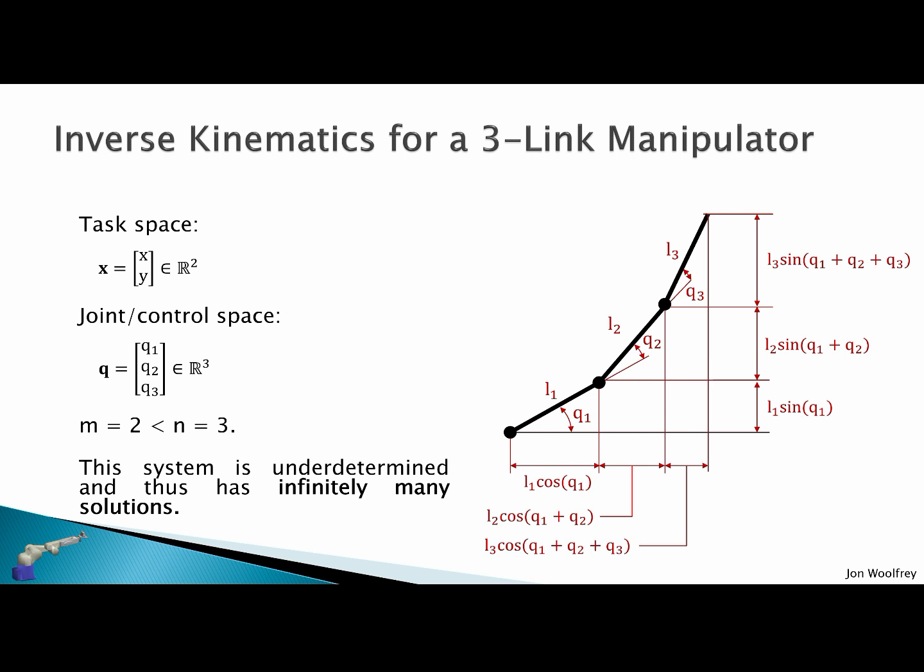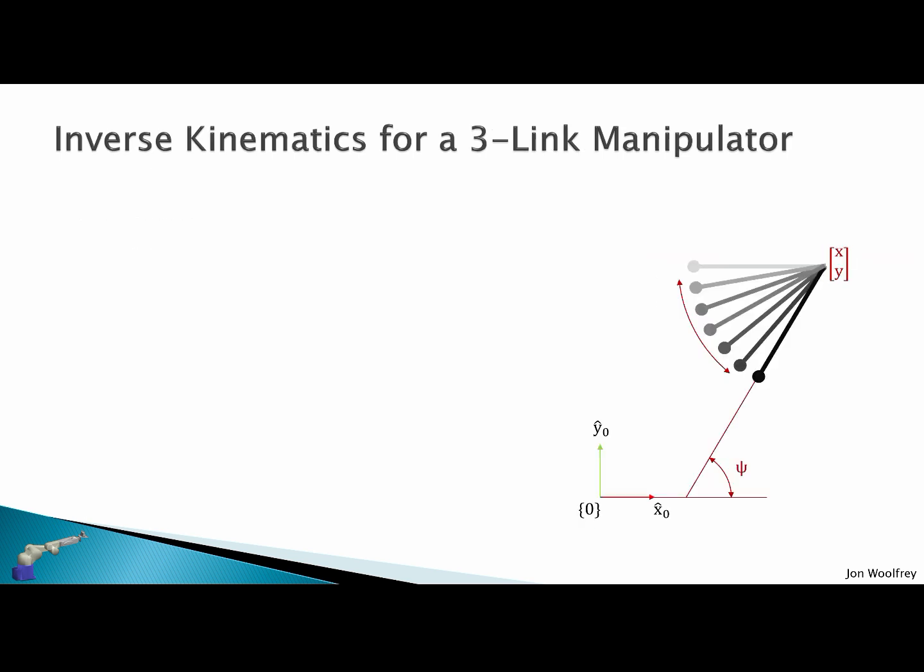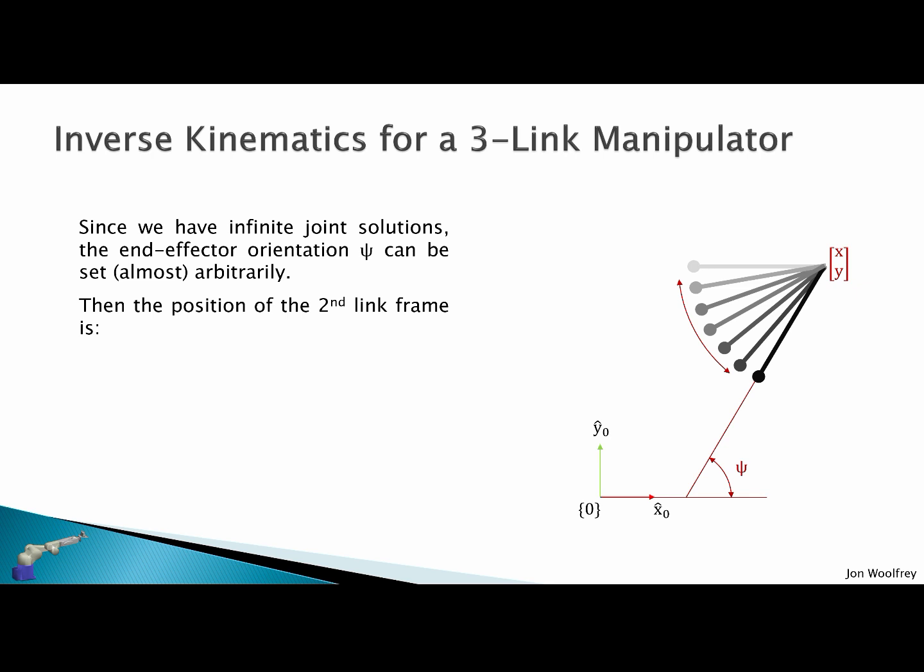The trick to this problem is that because we have infinite joint solutions, the end effector orientation psi can be set almost arbitrarily as you can see in this diagram. Then the position of the second link frame is given by p2 is x minus l3 cos psi and y minus l3 sin psi. And now we just need to solve the inverse kinematics to solve the first two joints. So effectively now we've set the position of the third link and we're left with two links, solving a two-link robot, and we already know this solution.